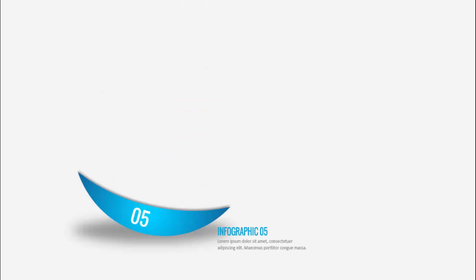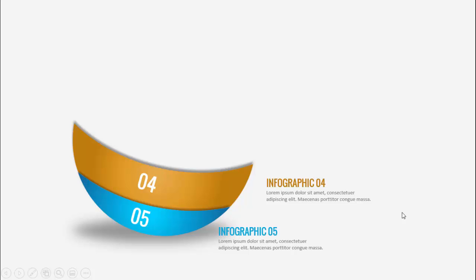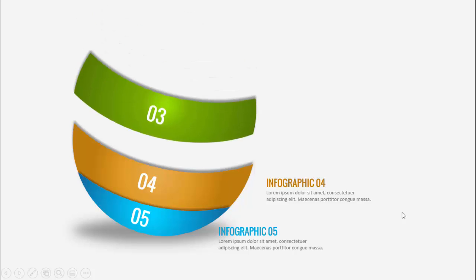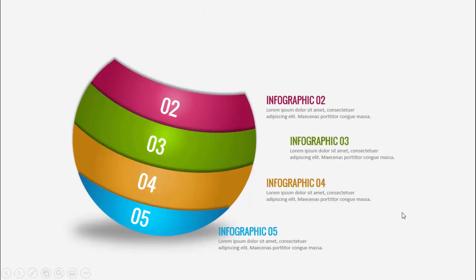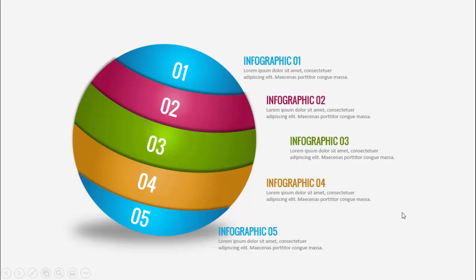In today's tutorial I'm going to show you how to create a five circular options infographic slide in PowerPoint. When I click the first option, you can see option 5 with the shadow effect. You can add the title and detailed text. Then clicking through gives option 4, option 3, option 2, and the last option 1, and it looks like a complete oval shape.